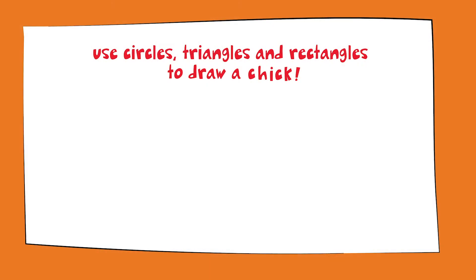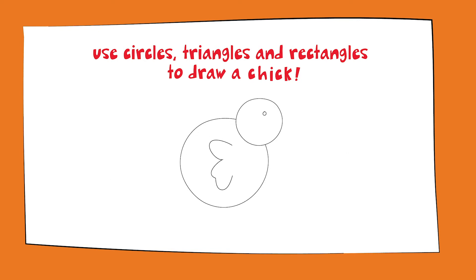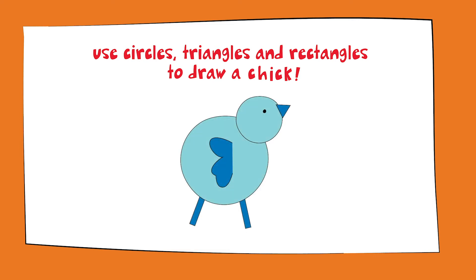So let's use two circles, two rectangles, and one triangle to draw a bird. Begin by drawing two circles. Next, two long rectangles on the bottom of your circle. Finally, add a triangle for the beak. Now color in your bird however you wish — I chose blue.